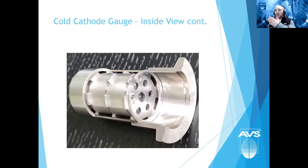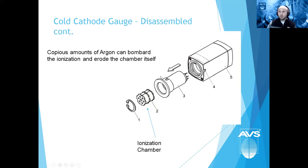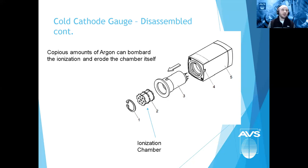A contaminated cold cathode shows a rainbow effect internally. Contaminated cold cathodes typically measure lower pressures than actual. You can remove and physically scrub a cold cathode clean. However, if you have copious amounts of argon with a cold cathode, you can bombard and erode the ionization chamber — so in argon-heavy applications, use a hot filament instead.